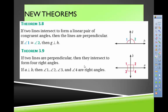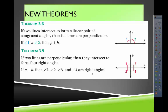Theorem 3.9: if two lines are perpendicular, then they intersect to form four right angles. This is related to the previous theorem. If the two angles on top add up to 90, it shouldn't surprise you that the two angles on the bottom would also be 90, giving us four right angles total.